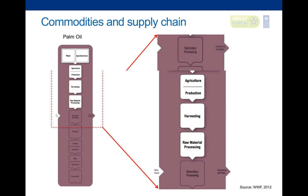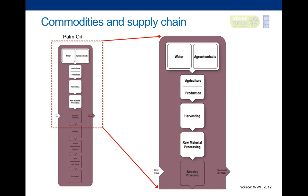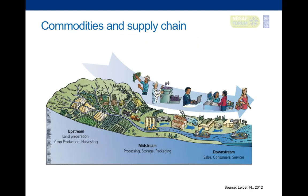The supply chain then continues with processing, storage, and packaging, going down to the sales and consumers where each and every one of us ends up buying one of these products. If we take a close look at one commodity in particular, like palm oil, we can see that there's water, agrochemicals, agriculture, production, harvesting, and raw materials involved.